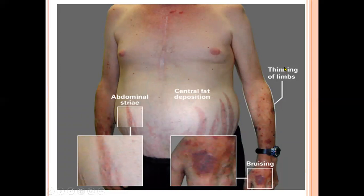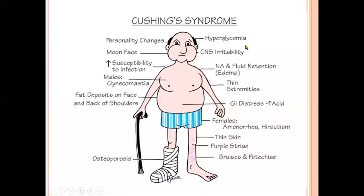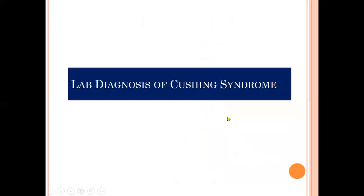Other features to keep in mind include abdominal striae, central fat deposition, thinning of the limbs, and easy bruising. Personality changes, hyperglycemia, moon facies, and CNS irritability may also be present along with fluid and sodium retention leading to edema. In females there may be amenorrhea and hirsutism. Osteoporosis may also be present. All these findings result from excess cortisol.